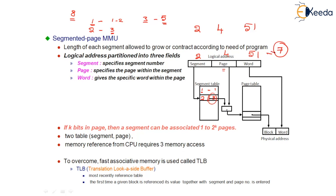The second segment starts from page 3 and I need the fourth page within the second segment, so obviously I want the seventh page. These two entries — the page field entry and the segment table entry — get added to exactly locate the page number. After this, we are left with only two entries: page number 7 and word address 51. We know this is a virtual address with just two fields — page number and word address — and we know exactly how to translate a virtual address into a physical address.